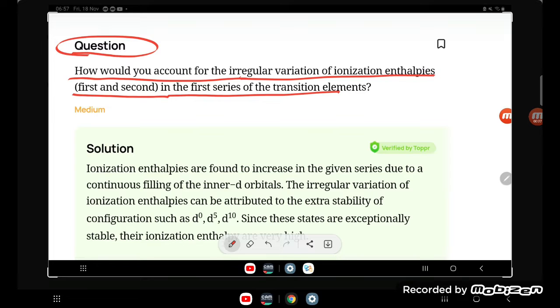In the first series of transition metals, the elements are scandium, titanium, vanadium, chromium, manganese, iron, cobalt, nickel, copper, and zinc. These are the first transition series.